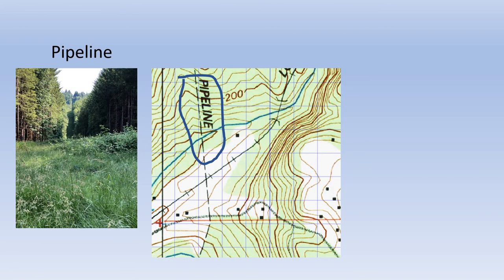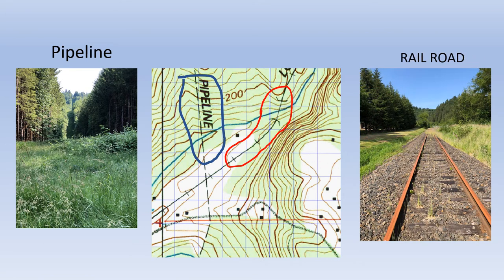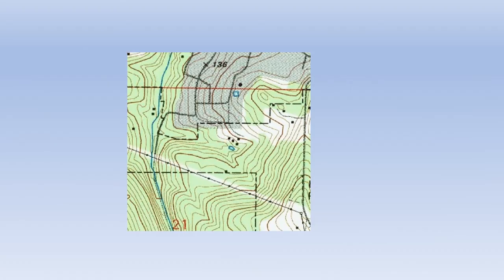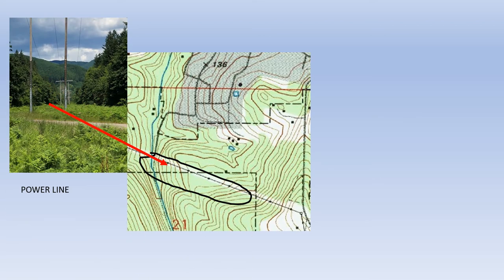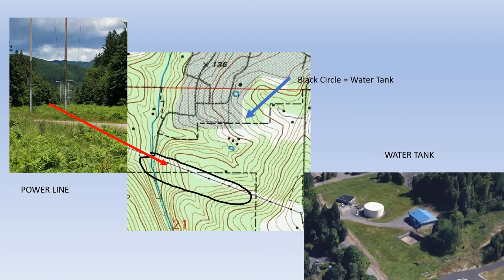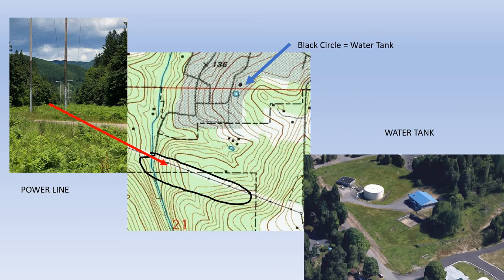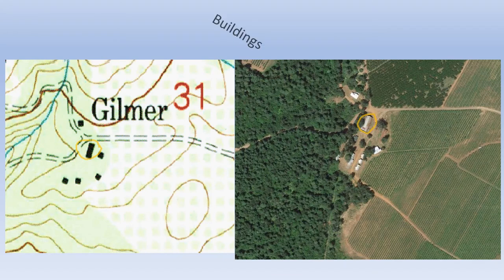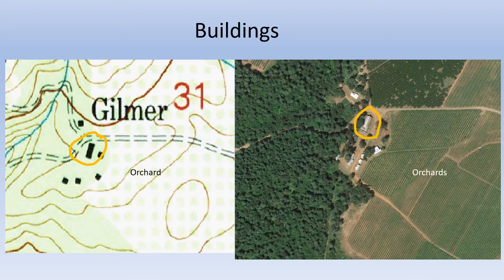Pipelines, railroads, and power lines create easy-to-recognize clearings, which are very helpful to ground searchers. Don't forget, what you see on the map reflects the age of the map and the choices of the cartographer. Not every building will be shown. Note that the orchard is identified by a grid pattern of green circles, and the natural forests are solid green.